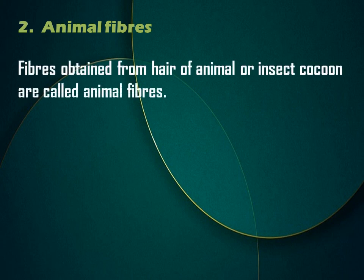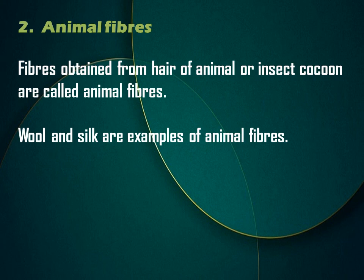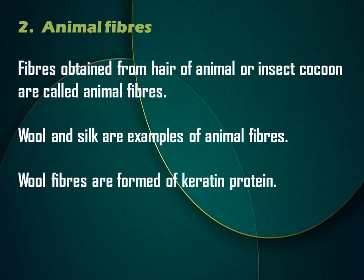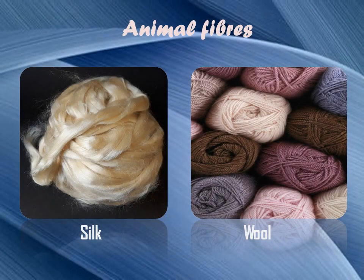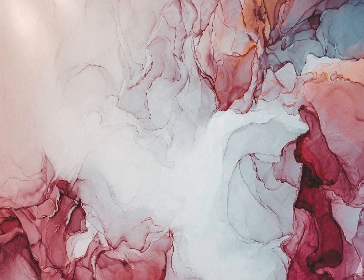Let us see animal fibers. Fibers obtained from hair of animals or insect cocoons are called animal fibers. Wool and silk are examples of animal fibers. Wool fibers are formed of keratin protein. Silk fibers are made up of sericin and fibrin proteins. This picture shows silk, obtained from the cocoon of a silkworm, and wool, obtained from various animals.